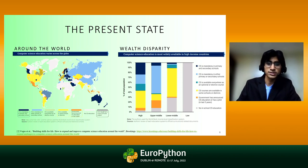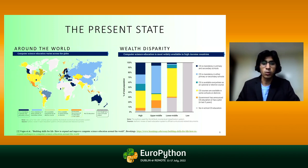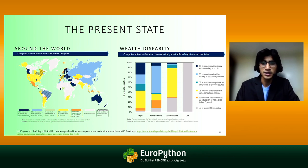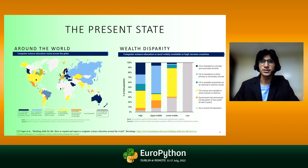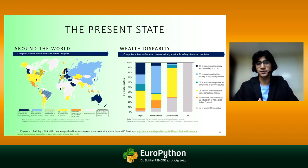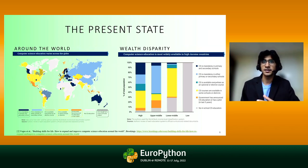We also see areas marked with a dashed line representing cross-curricular computer science education — some areas in Europe and some provinces in Canada, but not much else in the world. Cross-curricular computer science is the incorporation of computer science into other fields. This is the point of concern we seek to expand upon today: there is a severe lack of cross-curricular computer science education.